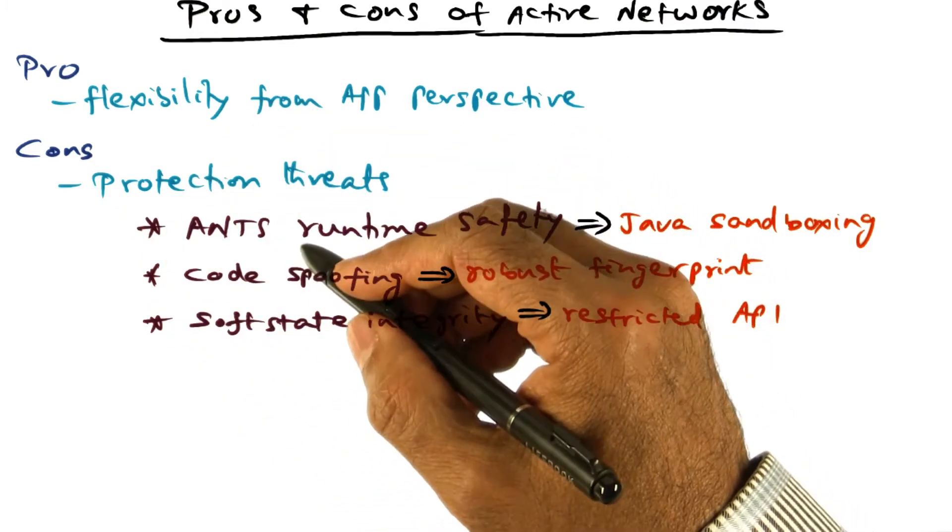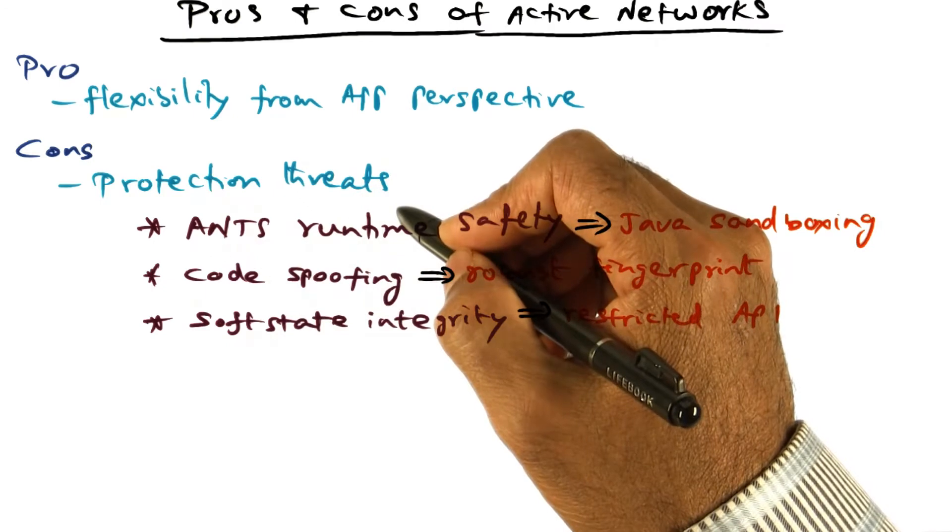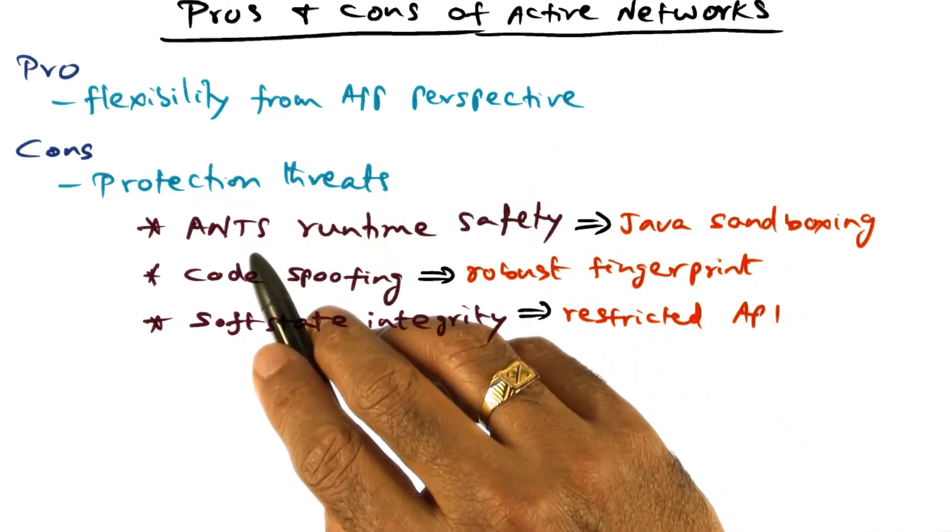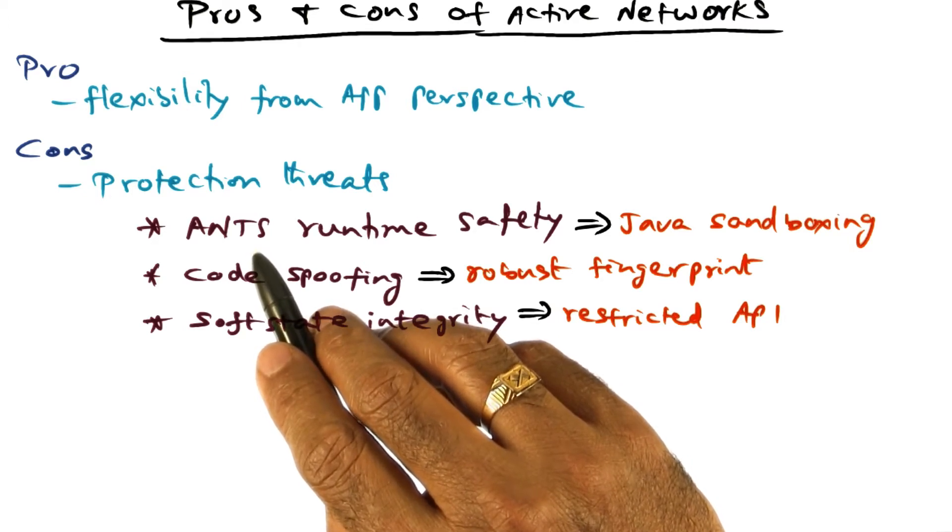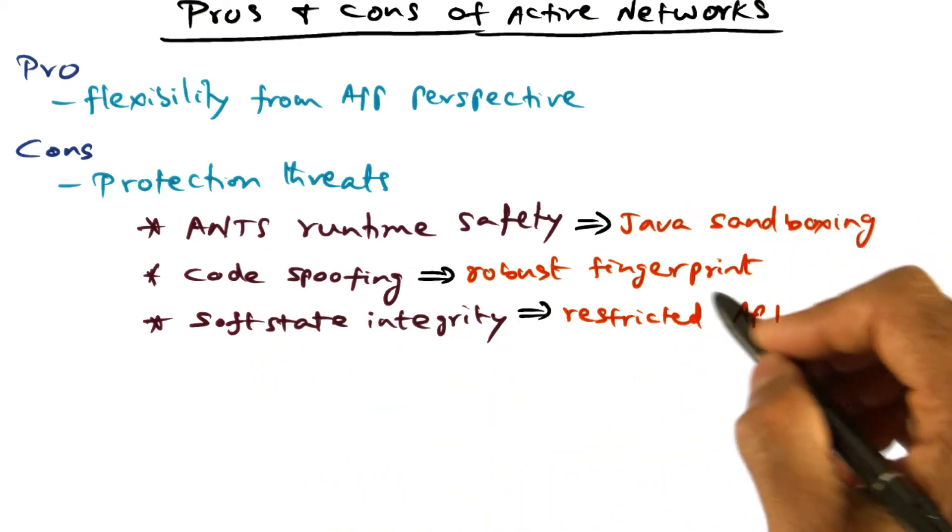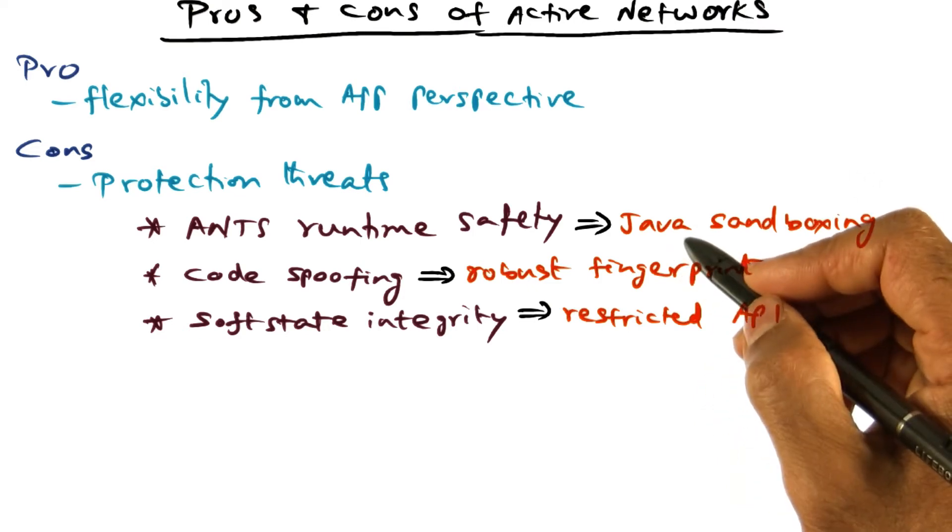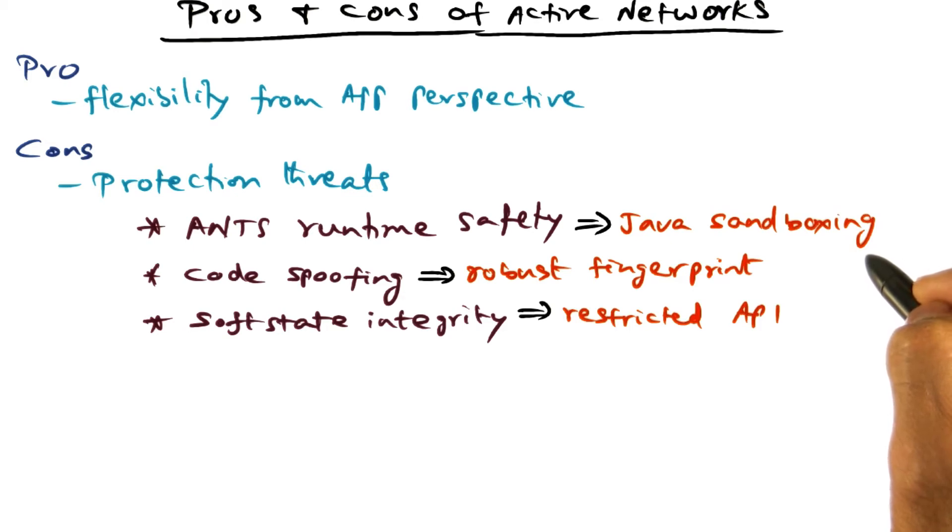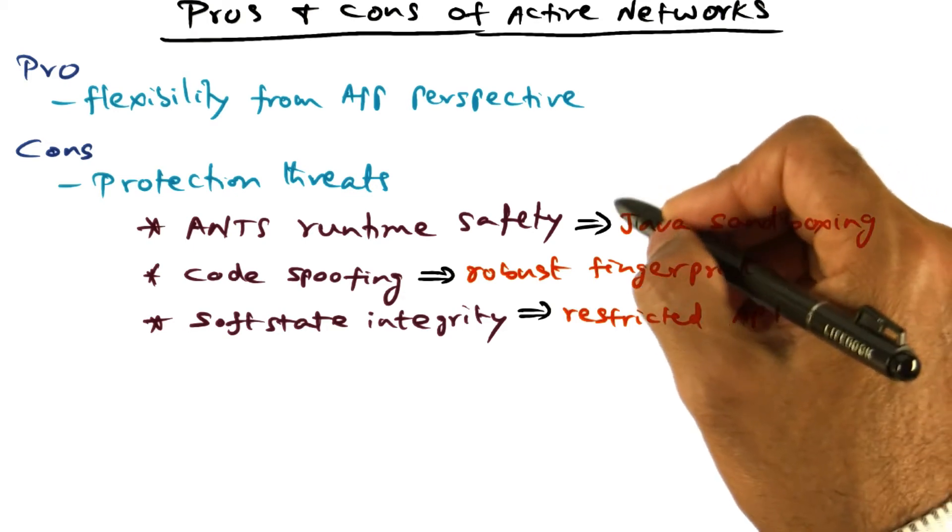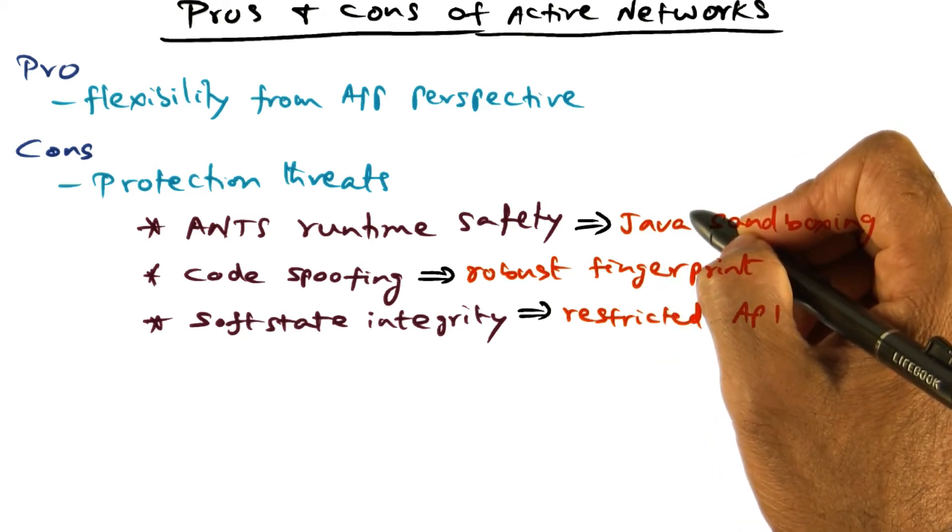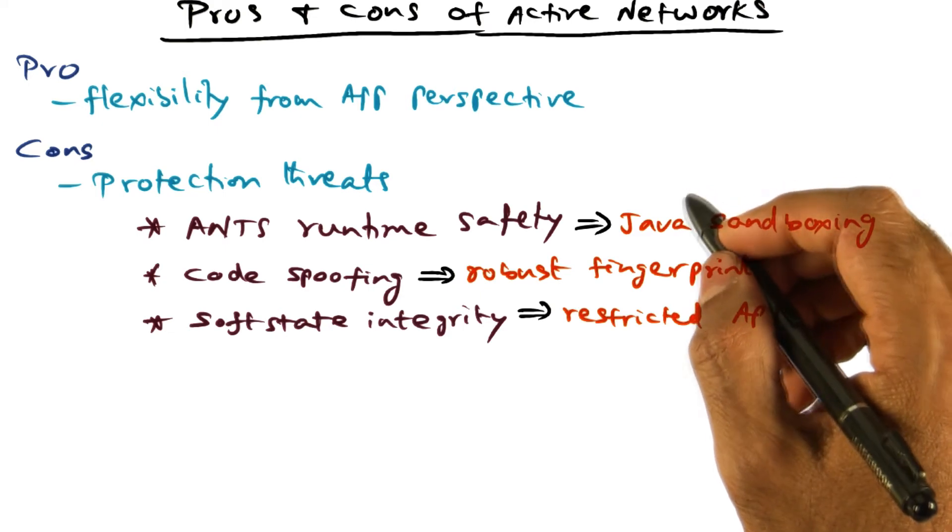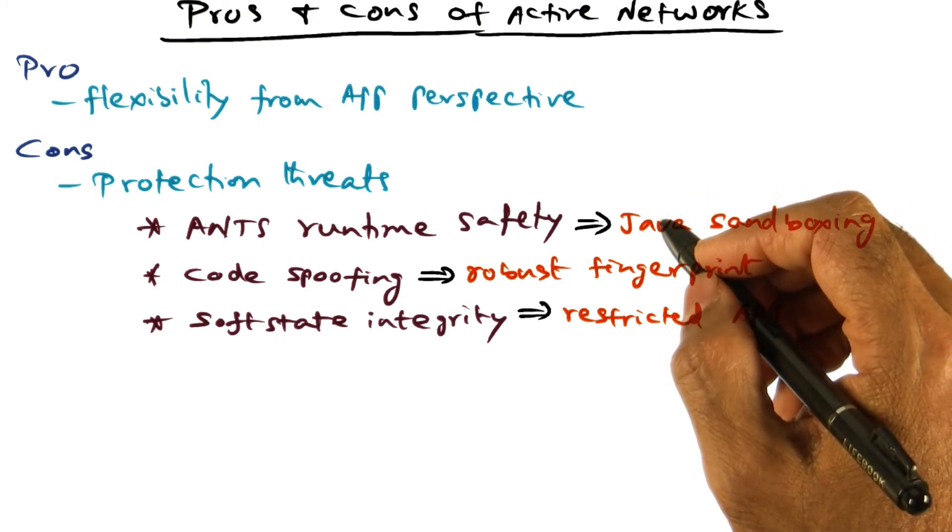So there are some safeguards in the ANTS toolkit to address this protection threats. The first is the runtime safety of ANTS program that is running on a router node. And the way they ensure that is by, first of all, implementing ANTS itself in Java, and using Java sandboxing technique on the router node so that anything that a router code is doing for capsule processing is limited to the Java sandbox that it is executing in. And so, it cannot affect the flows of other network flows that are flowing through the same routing fabric.